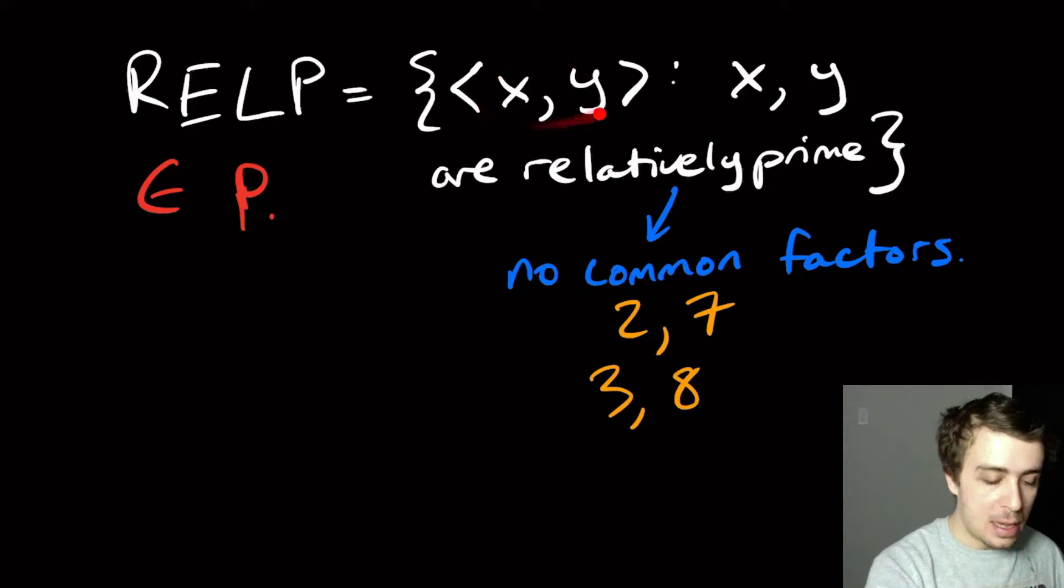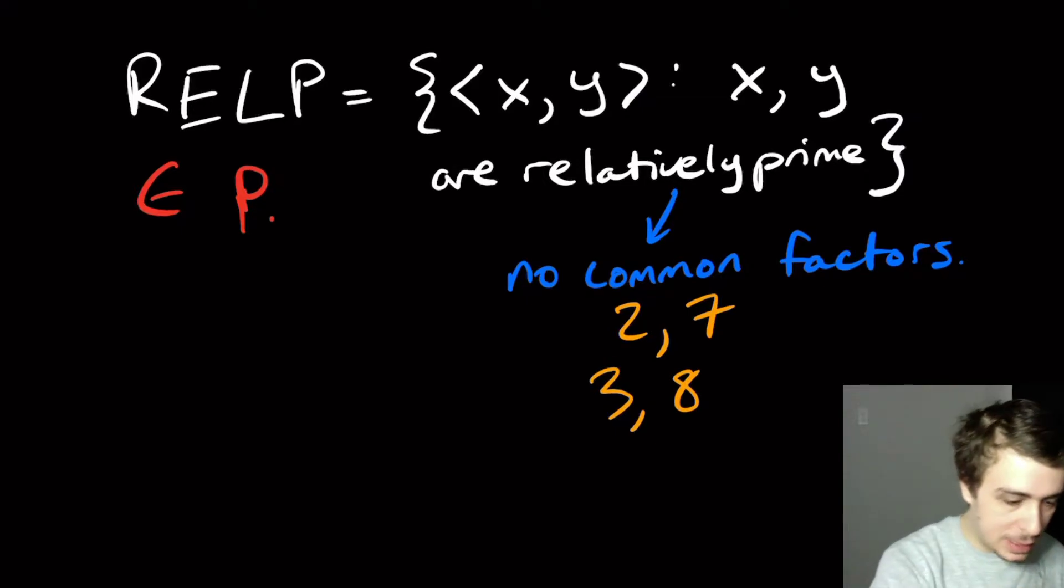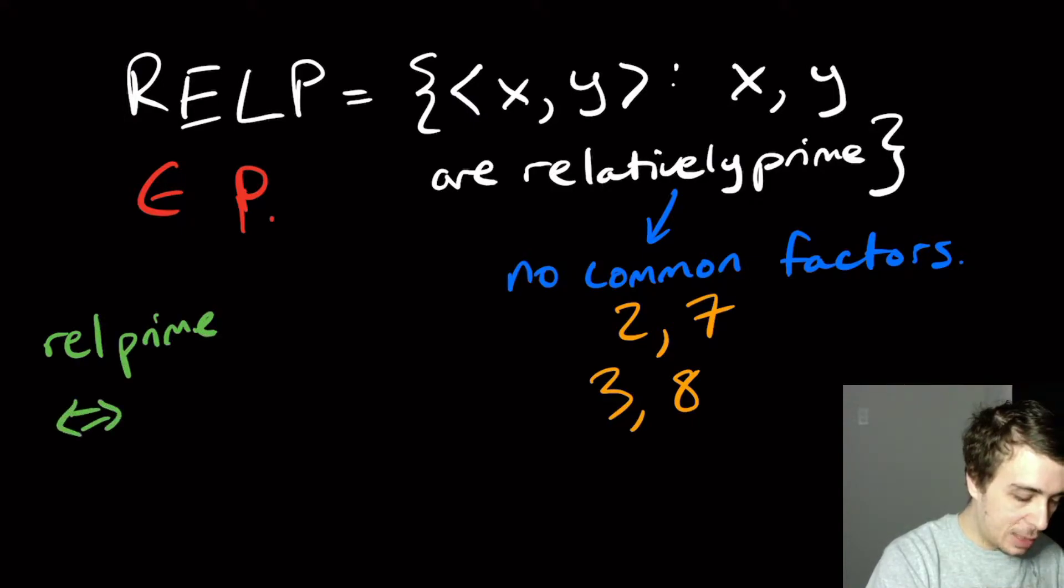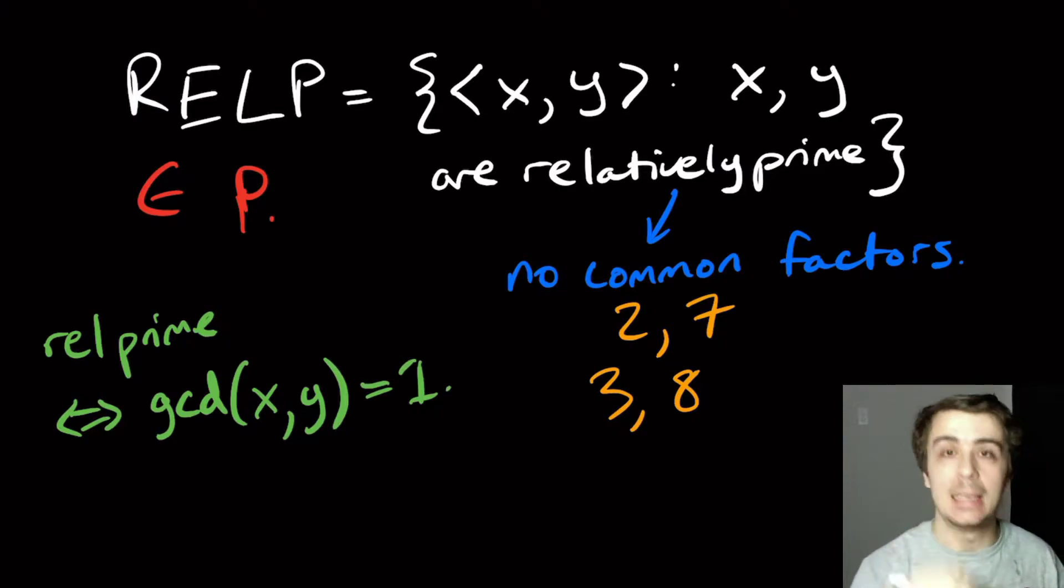I claim that this language is in P. So that means that if we're given two integers, I can figure out whether they are relatively prime and do it in a polynomial amount of time. The basic idea here is to note that relatively prime is the same thing as asking if the greatest common divisor of x and y is equal to 1. Because if it's larger, then that means that there is a divisor, a non-trivial divisor of the two.